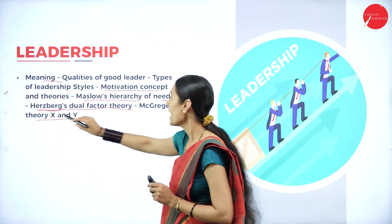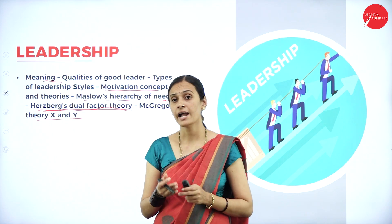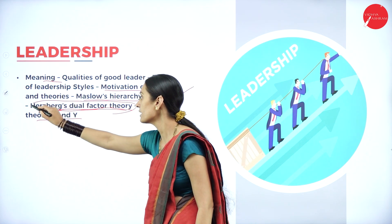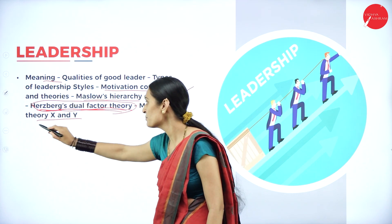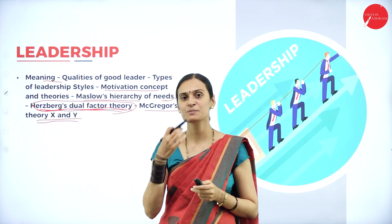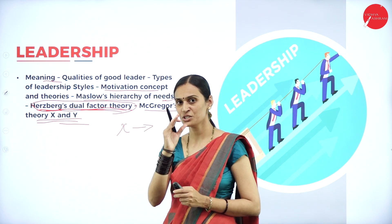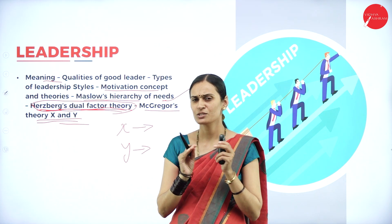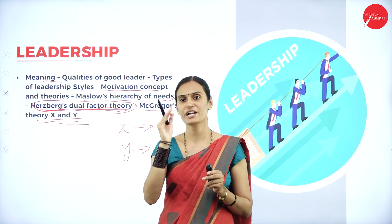The second motivation theory is Herzberg's Dual Factor Theory, which consists of motivators and hygiene factors, including challenging work, talent recognition, and increased responsibility. The third theory is McGregor's Theory X and Theory Y. Theory X is related to exclusive reliance on external control of human behavior, while Theory Y is related to self-control and self-regulation. The key difference is that Theory X treats people like children, while Theory Y treats people like mature adults.